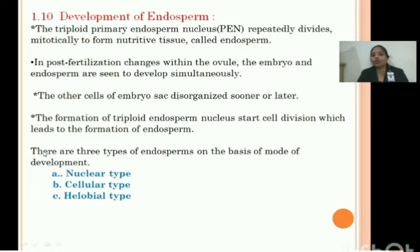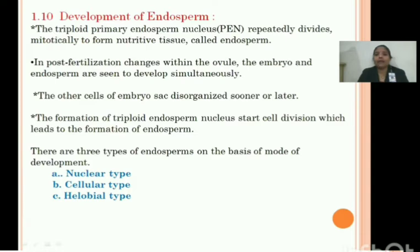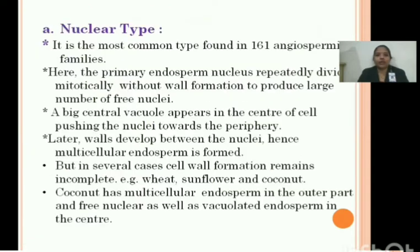There are three types of endosperm based on their mode of development. The first is the nuclear type, the second is the cellular type, and the third is the helobial type.